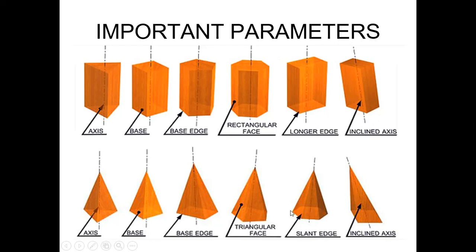Similarly, a pyramid also has an axis, a base, and base edges. The key difference is that all faces of a pyramid are triangular faces. The line joining a corner of the base to the apex is called a slant edge, and these triangular faces are called slant triangular faces.